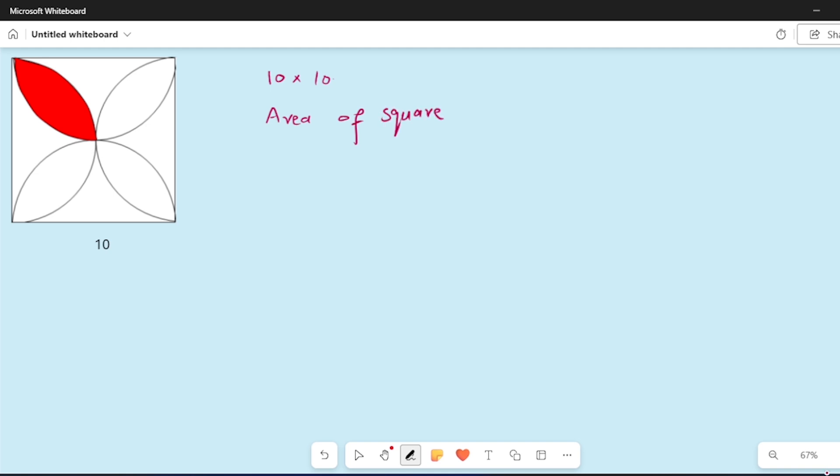Now the square is x square, or 10 x 10, that is 100. This square is 100. This area is 100.